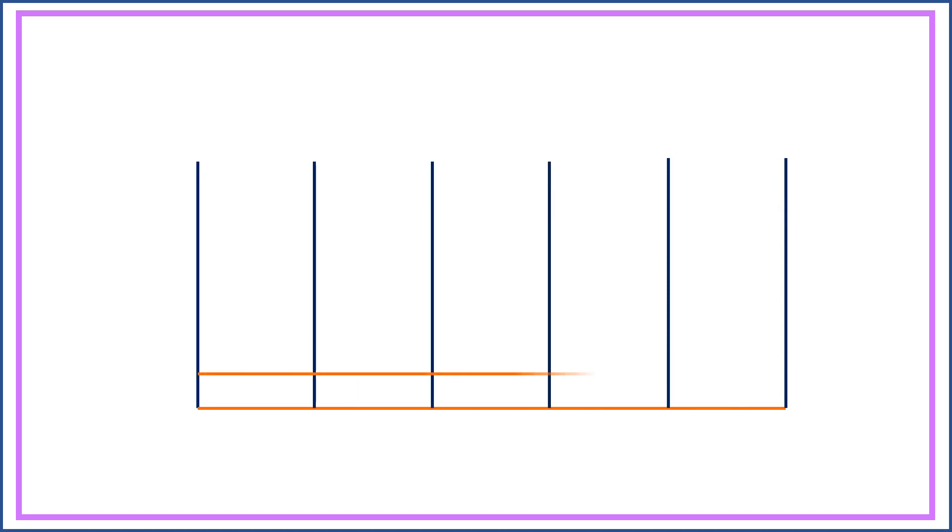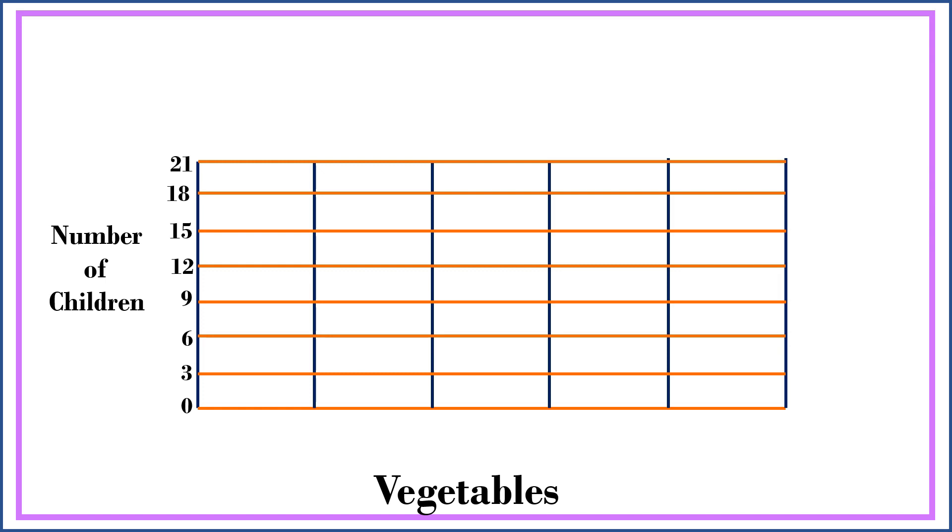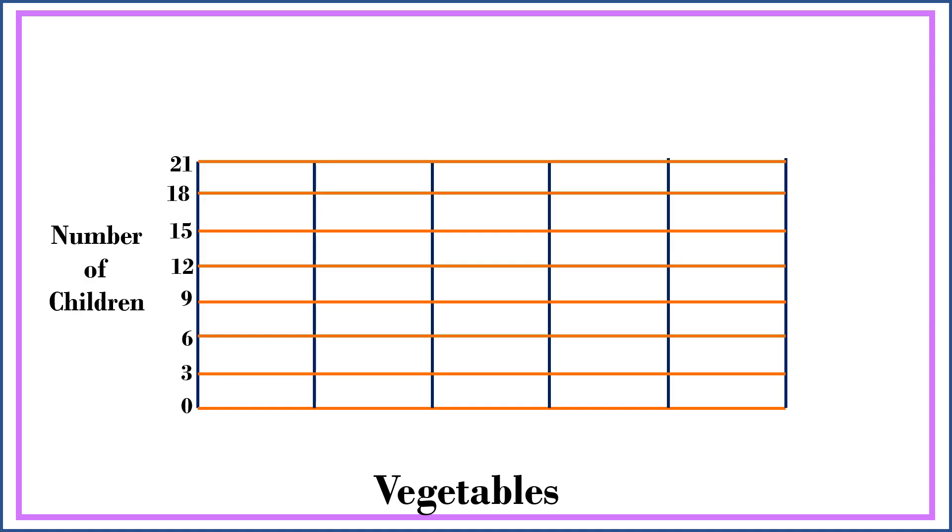First, we're going to draw a double vertical bar graph. Watch and learn. For the scaling, I use by 3 because the highest data in the table is 20. So from 0 to 21. Then, the vertical axis represents the kinds of vegetables.